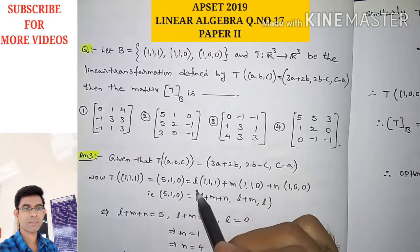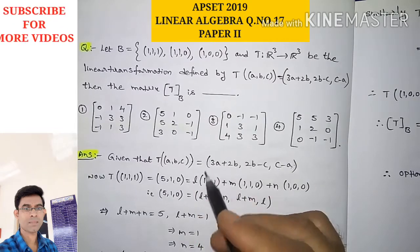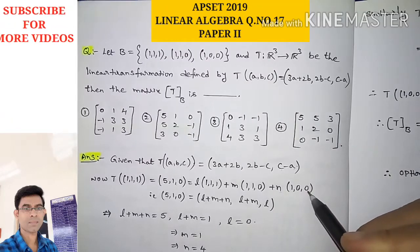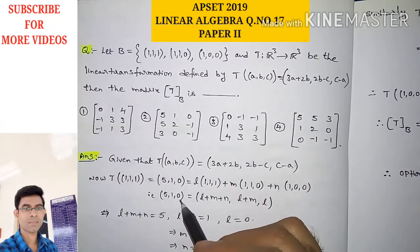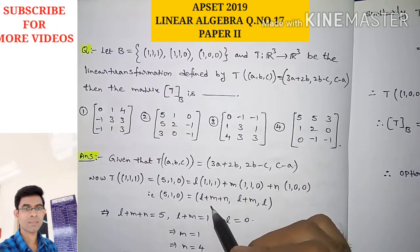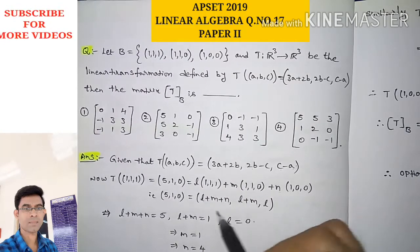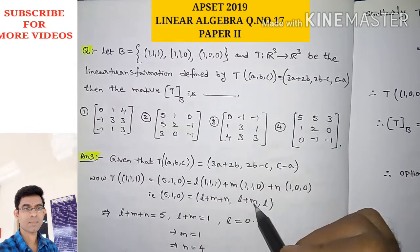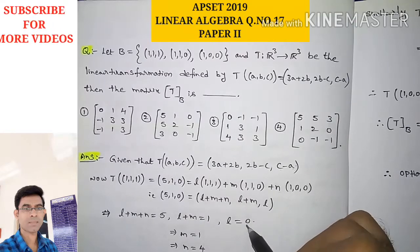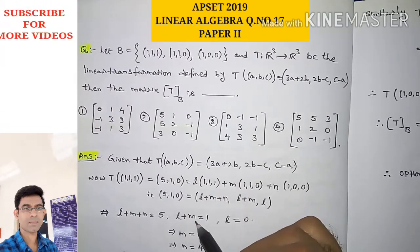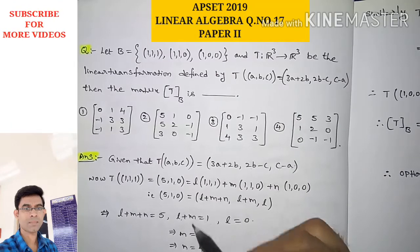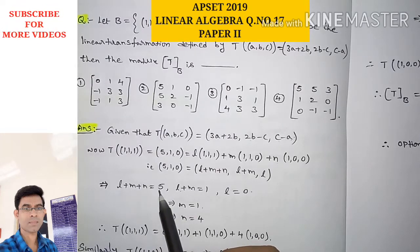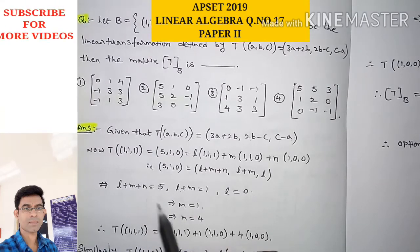We write (5,1,0) as L·(1,1,1) + M·(1,1,0) + N·(1,0,0), which gives coordinate-wise: L+M+N=5, L+M=1, and L=0. Substituting L=0 gives M=1, and then substituting L=0 and M=1 gives N=4.